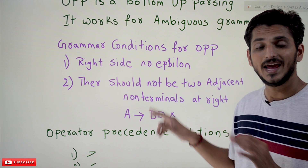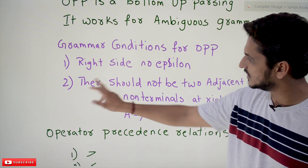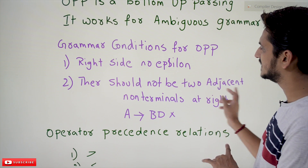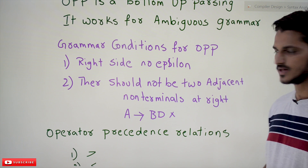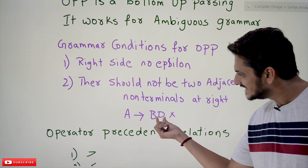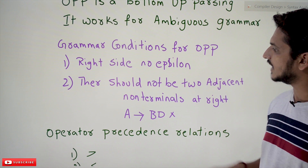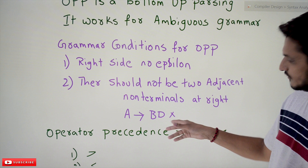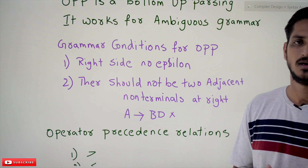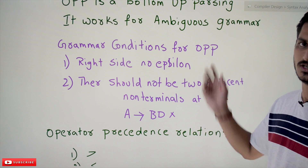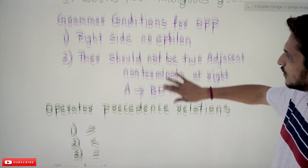Grammar conditions for OPP — operator precedence parsing: on the right side there should not be any epsilon in our grammar. Second condition: there should not be two adjacent non-terminals on the right-hand side. For example, A → BD — two adjacent non-terminals should not be there. Only then we can use operator precedence parsing; if they are present, we cannot use it.